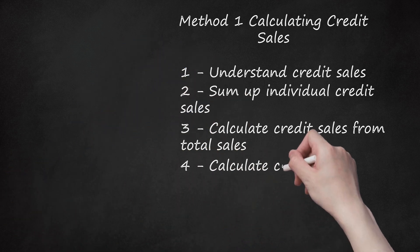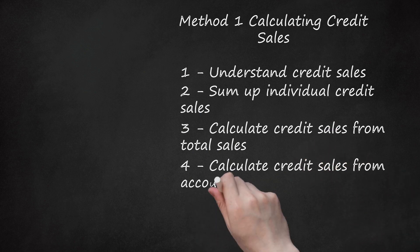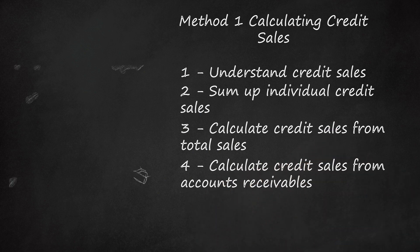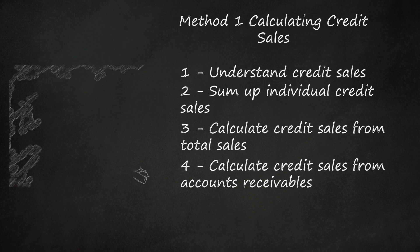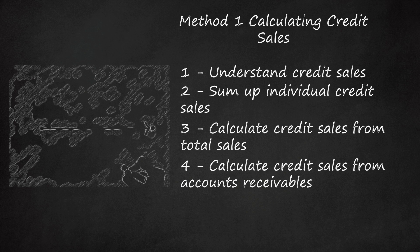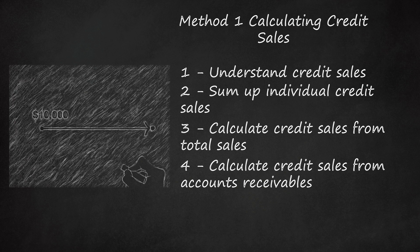Calculate credit sales from accounts receivables. The initial value at the start of the year can be seen from the balance sheet of the company. Let's assume the value to be $10,000. Start by finding the ending accounts receivable. It is the value at the end of the year, which can also be found from the balance sheet itself, just like initial accounts receivables. Let's assume it to be $5,000.